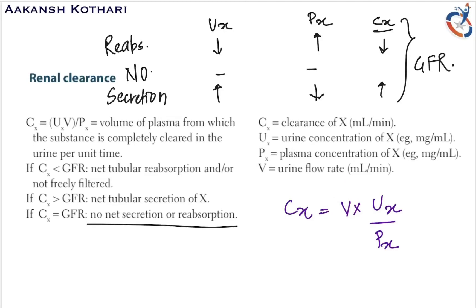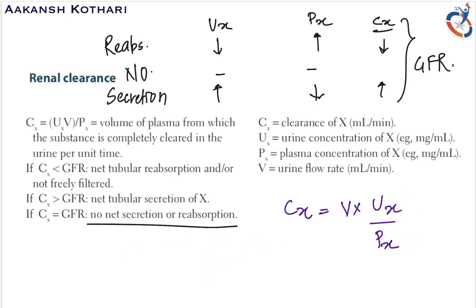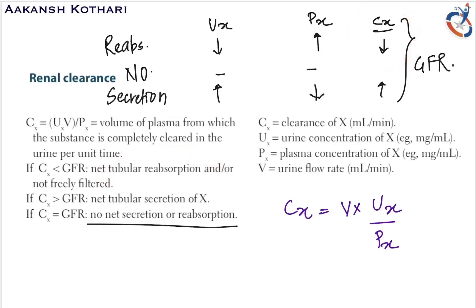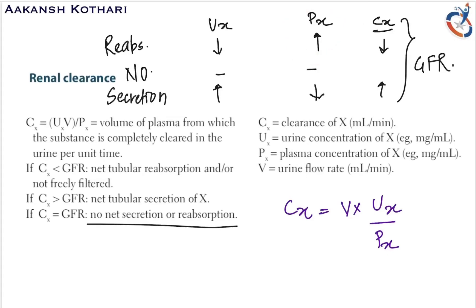If the clearance of any substance — such as inulin or glucose — is less than the glomerular filtration rate, then there is net tubular reabsorption. That means a lot of substance X is reabsorbed by the nephron, causing decreased concentration in the urine but higher concentration in the plasma, and the clearance decreases.